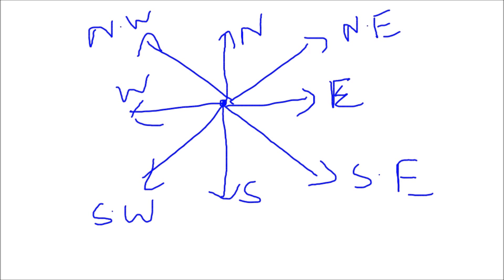There are two types of questions generally asked in Direction Sense Test. Type 1 is when you are given cardinal directions — for example, James was moving towards North, then he turned towards East, then towards West. Type 2 deals with relative directions — he turned left, then right, then again left — only dealing with left and right.